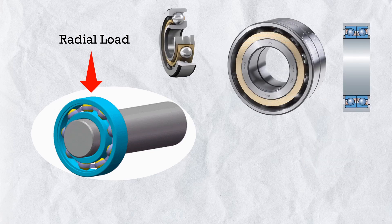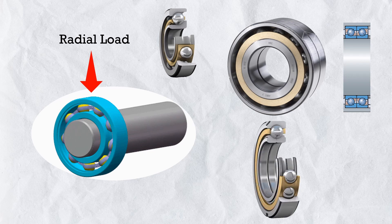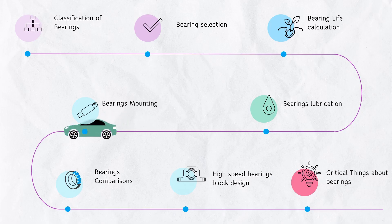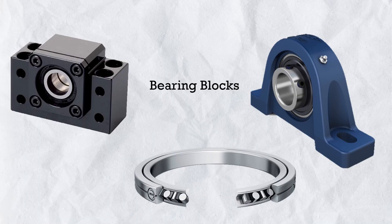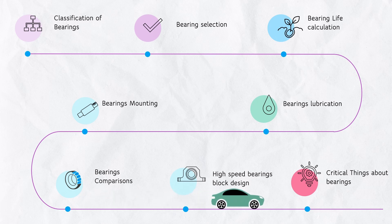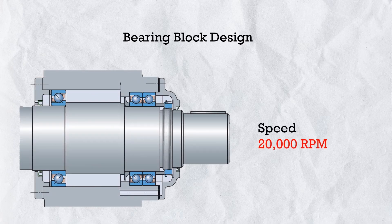So we will also try to understand how to compare bearings and select the best suitable one. Later in this series we will also master different types of bearing blocks. But standard commercial bearing blocks are usually not available for high-speed applications — speeds like more than 12,000 rpm. So later in this series we will also design a high-speed bearing block for speeds up to 20,000 rpm. And to make this more challenging, we will design an angular contact bearing block.